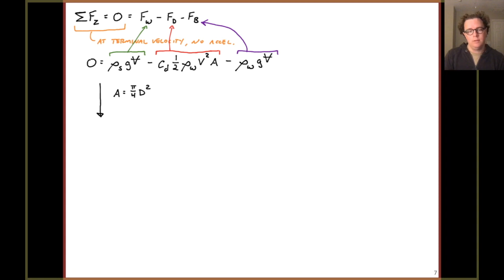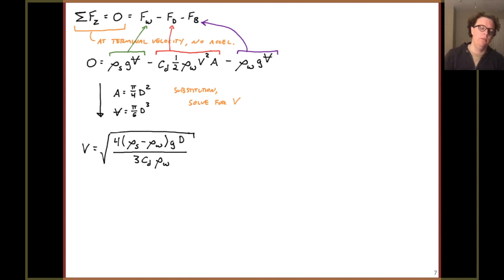If we're going to make the assumption this is a perfect sphere, we can actually substitute in some knowledge. We know the area of a circle is π/4 times its diameter squared, and we know the volume of that sphere is π/6 times its diameter cubed. So if we substitute those in and rearrange for what we're actually trying to solve, that velocity V, we get an equation that looks something like this. Up in the numerator, we've got 4 times the density difference between the solid and the fluid being displaced, multiplied by gravity times diameter. And down in the denominator, 3 times that drag coefficient times the density of water. So you can go ahead and do the algebra to prove it to yourself that we can get to this equation.